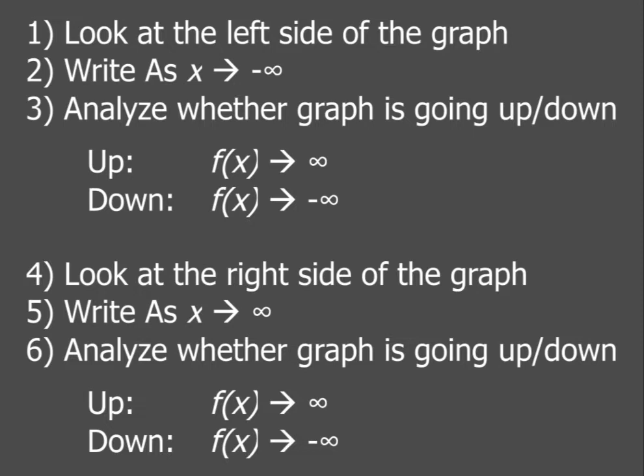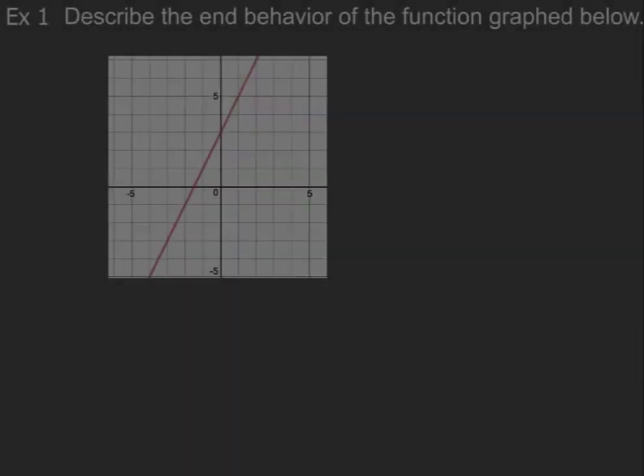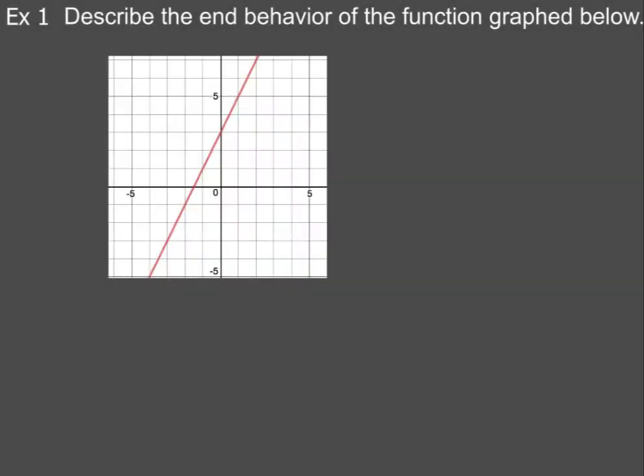So let's just kind of take a look at this first example here, and I think everything will make sense. Here we go. Now, when we describe the end behavior of the function graphed below, first thing we're going to do is look at the left side. Now, remember, the left side is where? That is right here. Boom. So we're going to analyze that left side. And when we do, we're like, hey, we've got to write this down as x goes to negative infinity, because that's the left side.